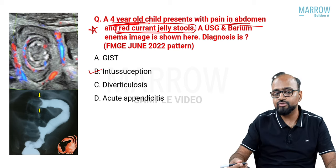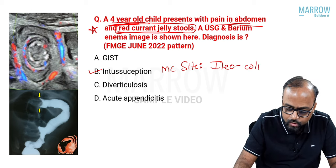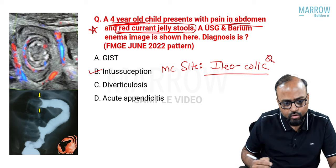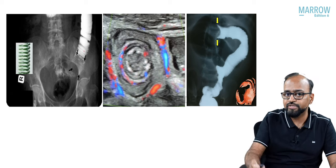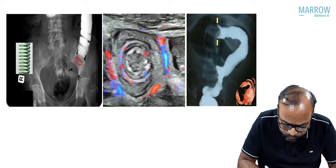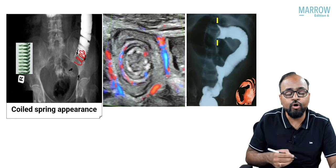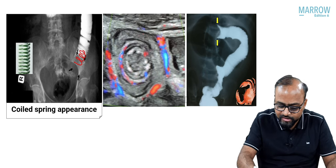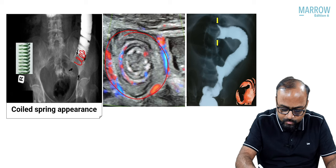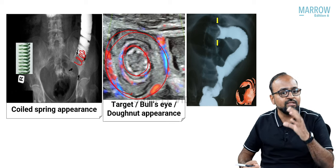The most common site of intussusception is iliocolic — telescoping of one bowel into the other. On barium enema, the bowel wall folds lined by contrast give the coiled spring appearance. On ultrasound in transverse view, you see an outer bowel with an inner bowel inside — this is called the target sign, bullseye sign, or donut appearance.